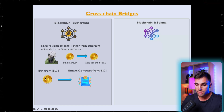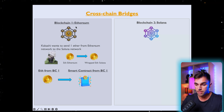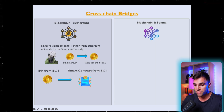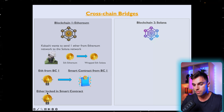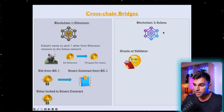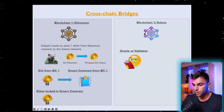He's going to send his Ethereum on the first blockchain — Ethereum — to a smart contract on the Ethereum network. That smart contract is essentially going to lock that Ethereum up, so he no longer has access to it.